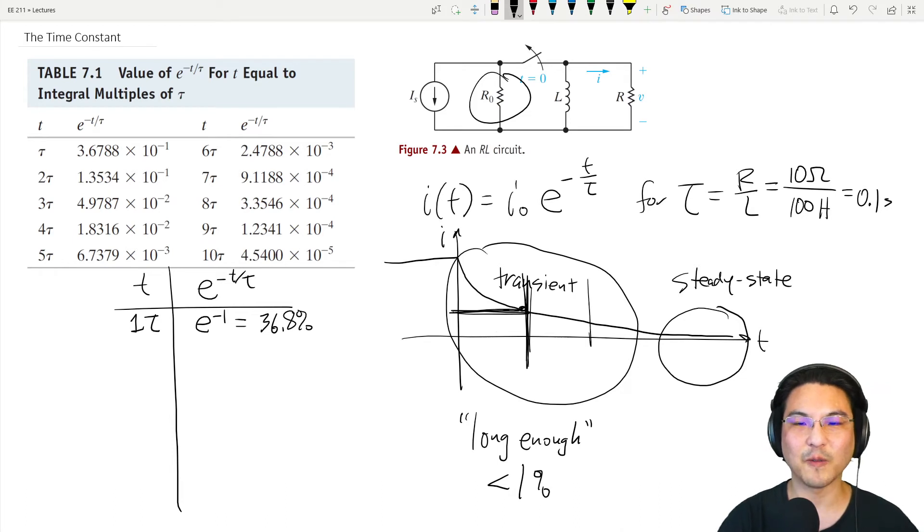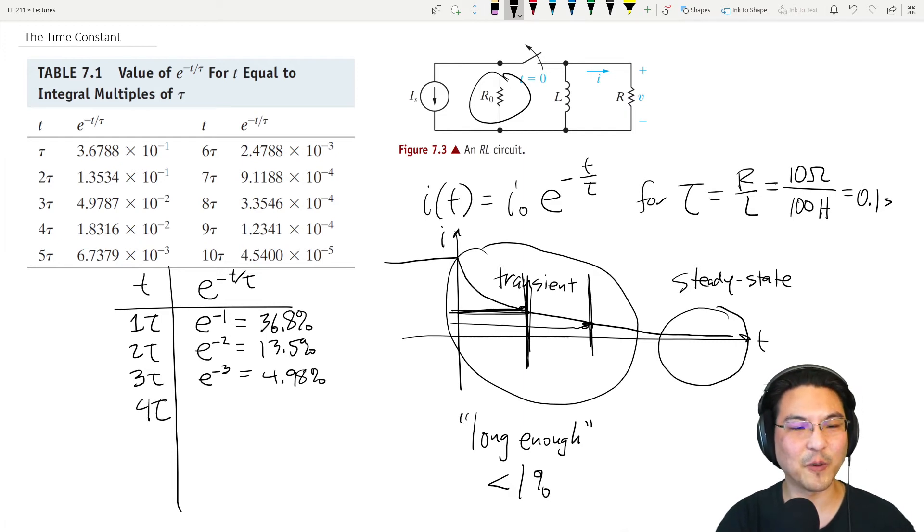What if you wait two time constants? That's e to the minus two—punch that in the calculator, it's 13.5 percent. Now we're down to 13.5 percent. What if you wait three time constants? e to the minus three, punch in the calculator, is 4.98 percent. You wait three time constants, you're already down to only five percent.